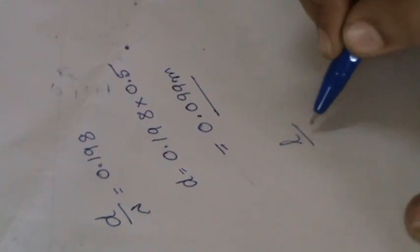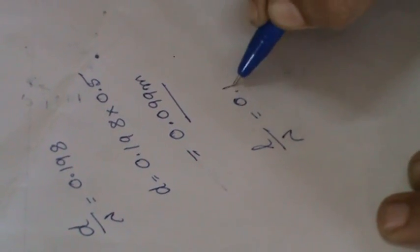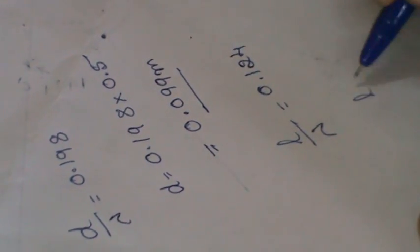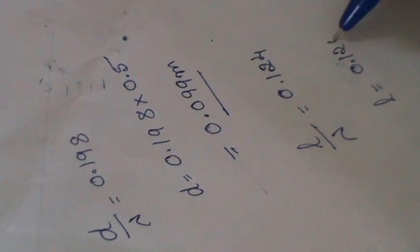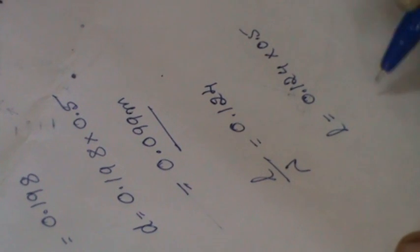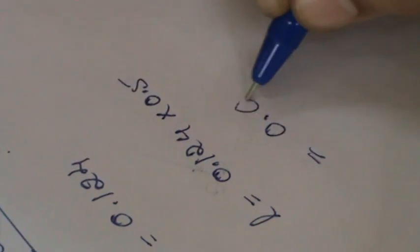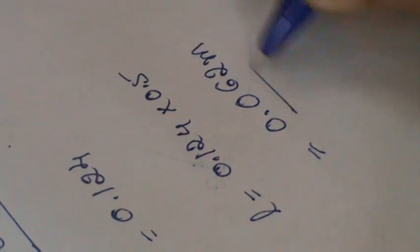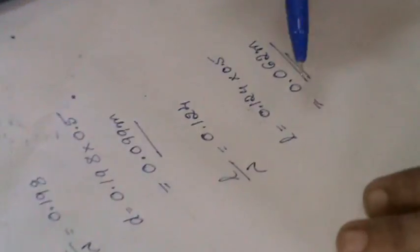Similarly, l by lambda we have got as 0.124 and l equals 0.124 times 0.5. That value will be 0.062 meter. If you get the distance and the length of the stub then your design of single stub matching process is done. Thank you.